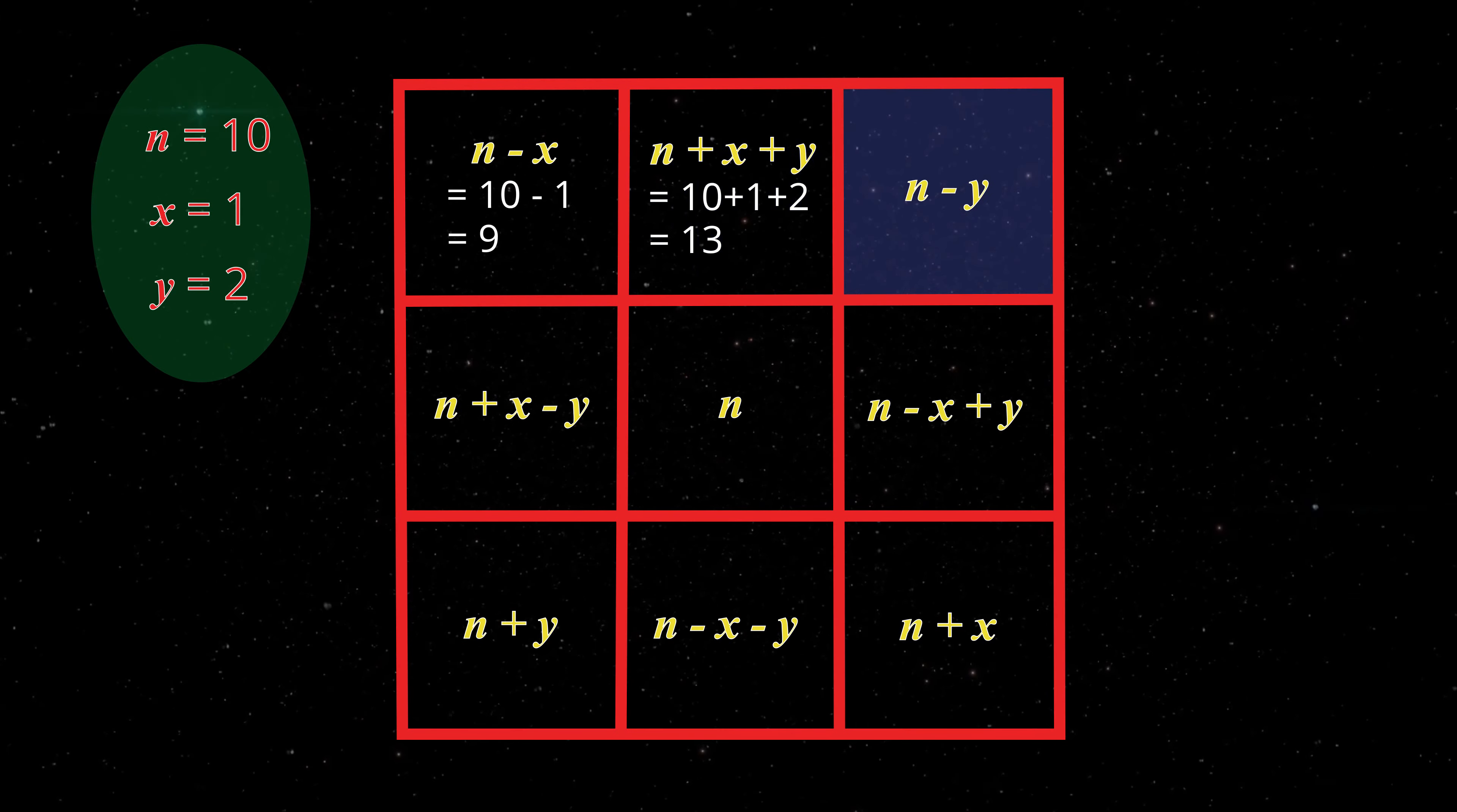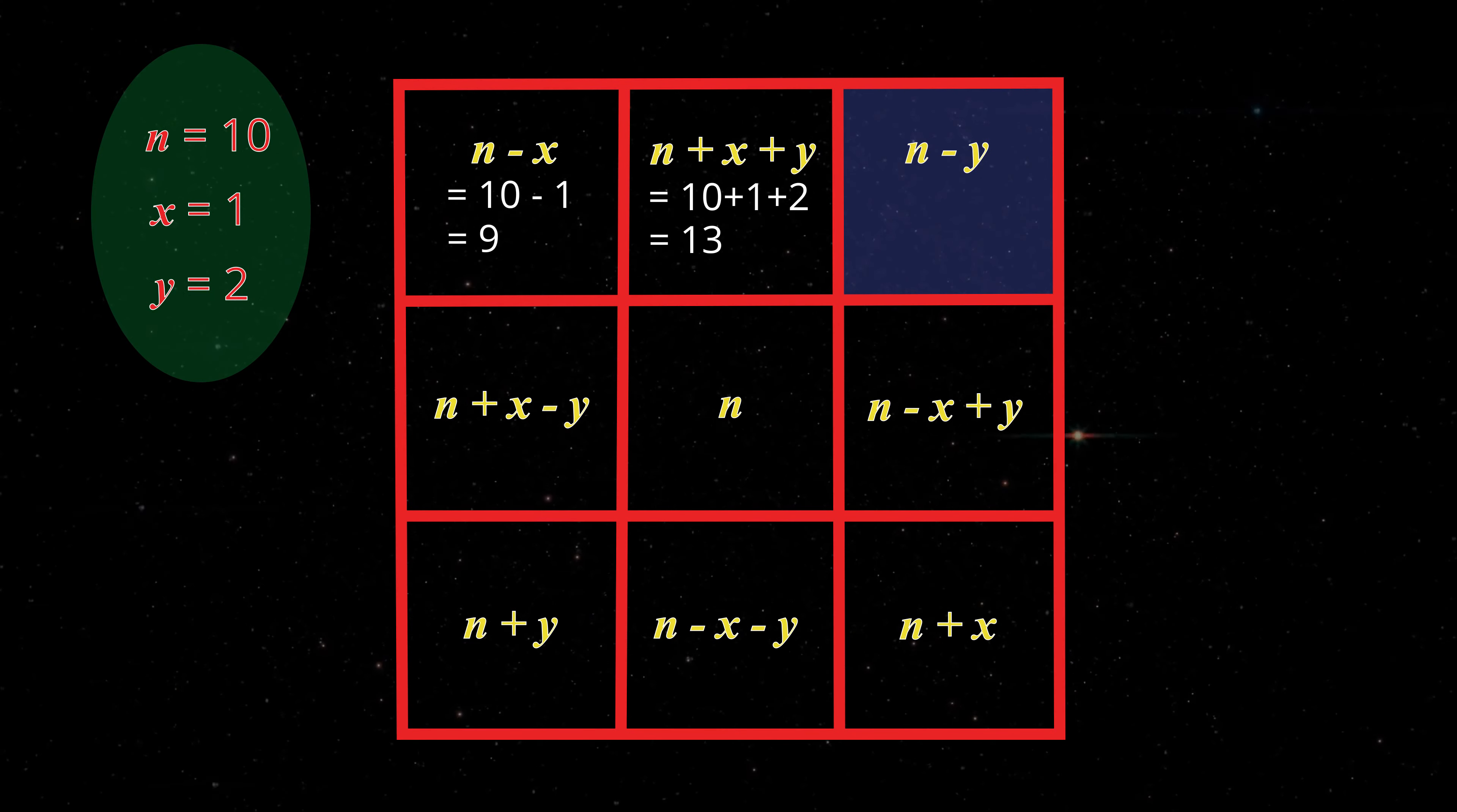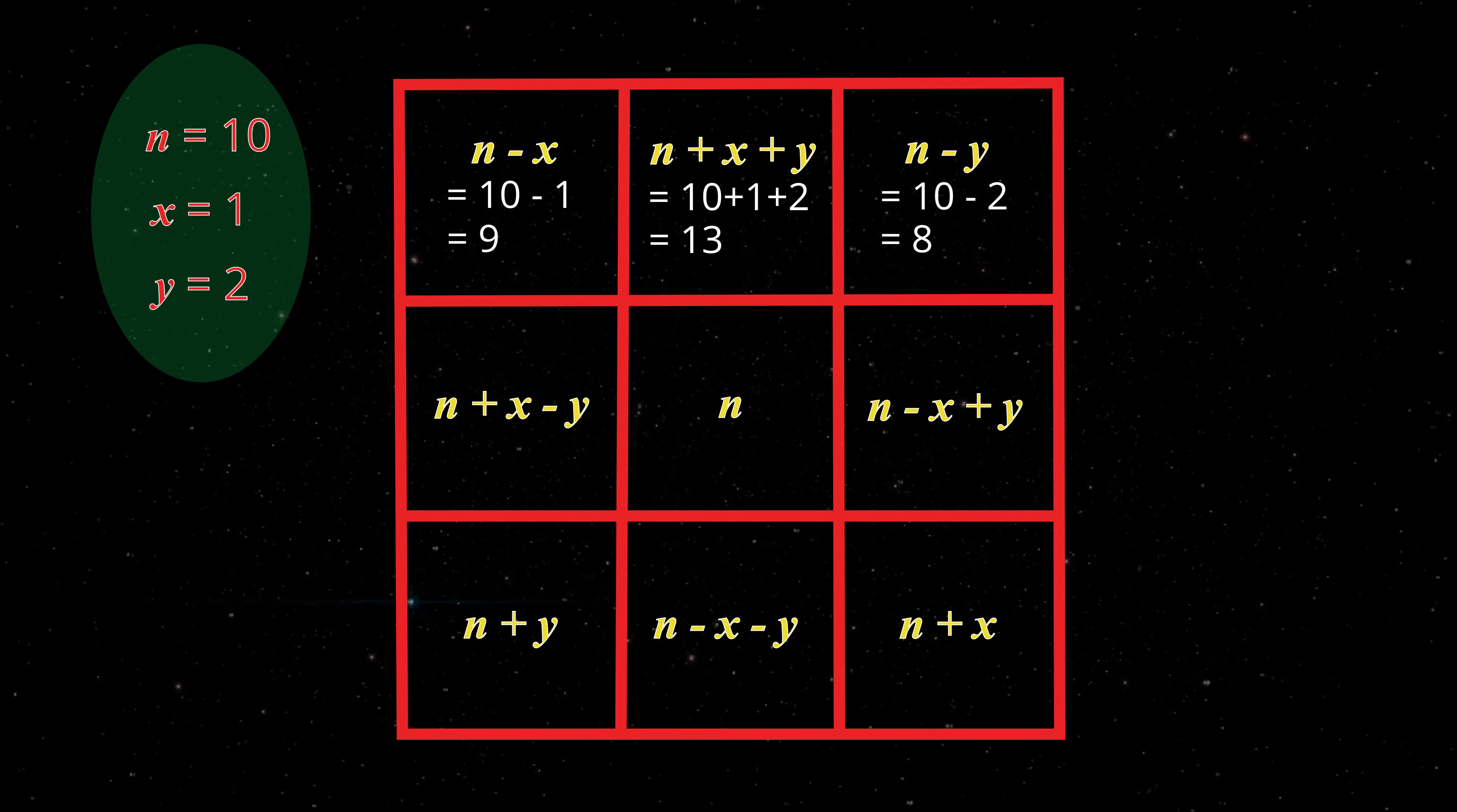Next, let's work out the top right box. n minus y is 10 minus 2, which is 8. Let's work out the rest of the boxes.